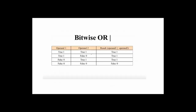For bitwise OR: true OR true equals true, true OR false equals true. If there is a one in either operand, we get one. Only when both operands are zero do we get false. So one OR zero gives one because there is a one available.